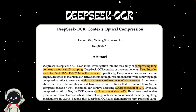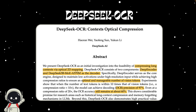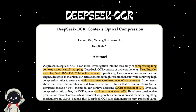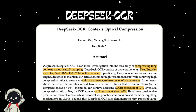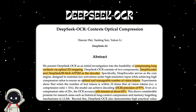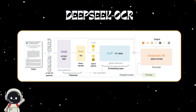The two parts are a new encoder called Deep Encoder, and a mixture-of-experts decoder called DeepSeek-3B MoE A570M. The encoder converts an entire document into a compact set of vision tokens, then the decoder reconstructs the text — effectively reading the document from a compressed visual representation. DeepSeek achieves 97% OCR accuracy even when the visual tokens are 10 times fewer than the number of text tokens, and at 20x compression it still maintains around 60% accuracy.